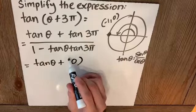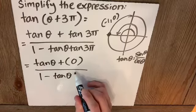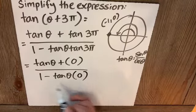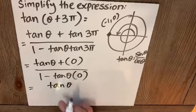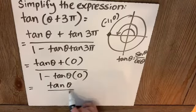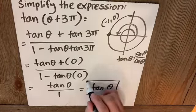over 1 minus tangent of θ times 0, which simplifies to numerator tangent of θ over 1 minus 0 gives us 1. So there is our simplification.